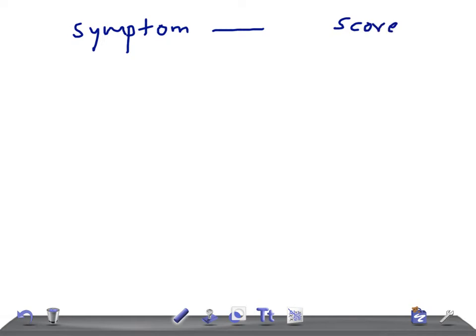So now let's talk about the symptoms and the score. Remember, depending on the score, we can say whether it's possibly appendicitis, probably or very probably. So let's talk about the Alvarado score for appendicitis.